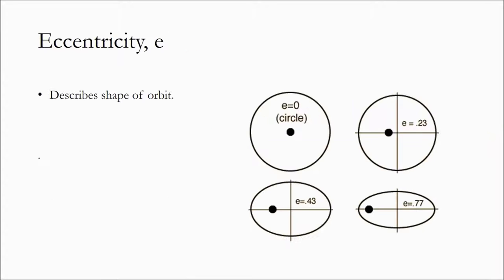Moving on to the eccentricity — it describes the shape of the orbit. When you increase the eccentricity, you flatten out your ellipse. The major axis gets longer, the minor axis gets shorter, and the foci move further and further away from the center.